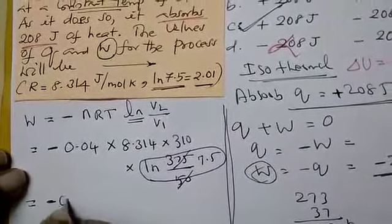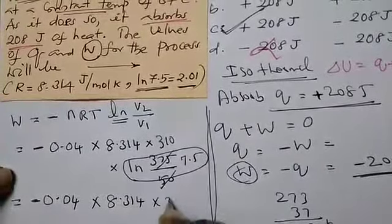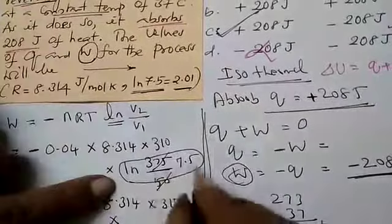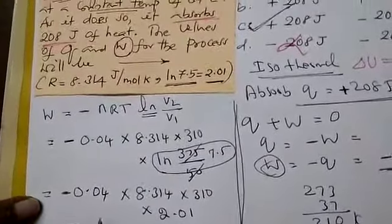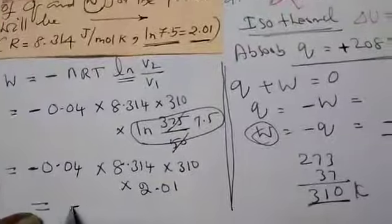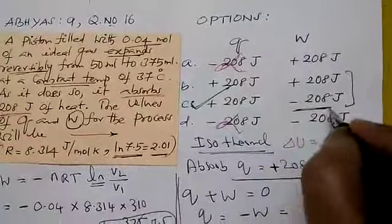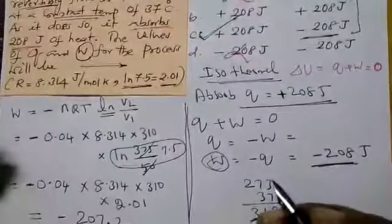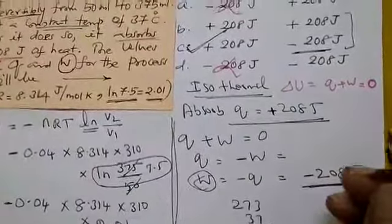Now our work is -0.04 × 8.314 × 310 × 2.01. If you do calculation, you'll get value 207.2 after multiplication, nearing our answer. That is the answer. Children, if you start like that it's time consuming. You can select this method and approach the answer. Thank you children.